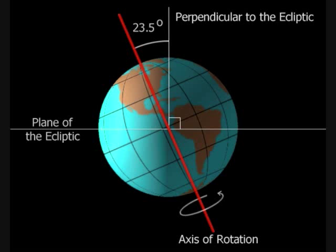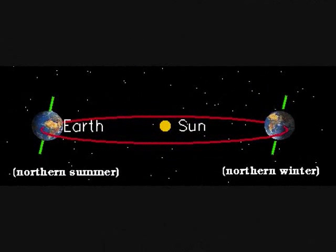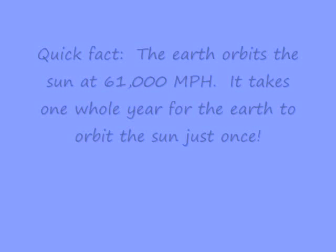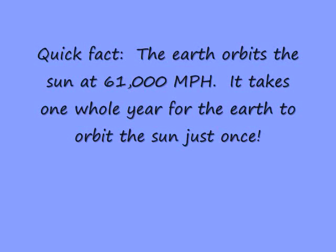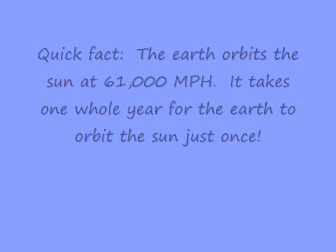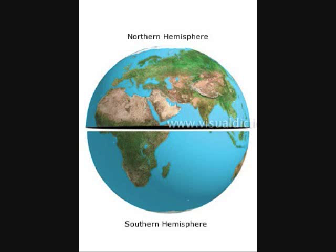The Earth tilts on its axis 23.5 degrees while orbiting the Sun. As the Earth orbits the Sun, the Earth's axis always points in the same direction, as you can see in the picture. The tilt of the Earth causes the northern and southern hemispheres — the upper and lower halves of our planet — to experience sunlight at greater or lesser degrees.